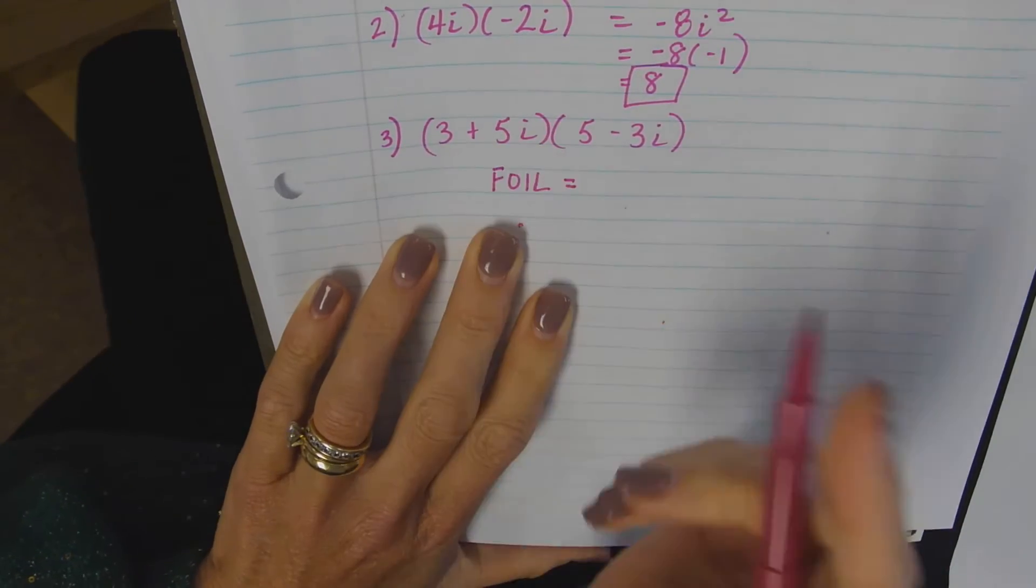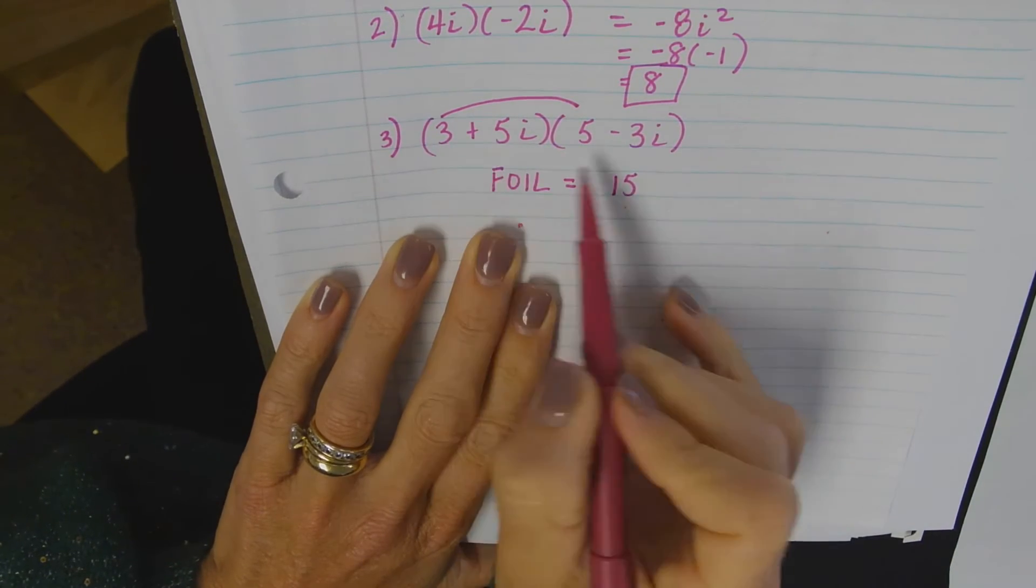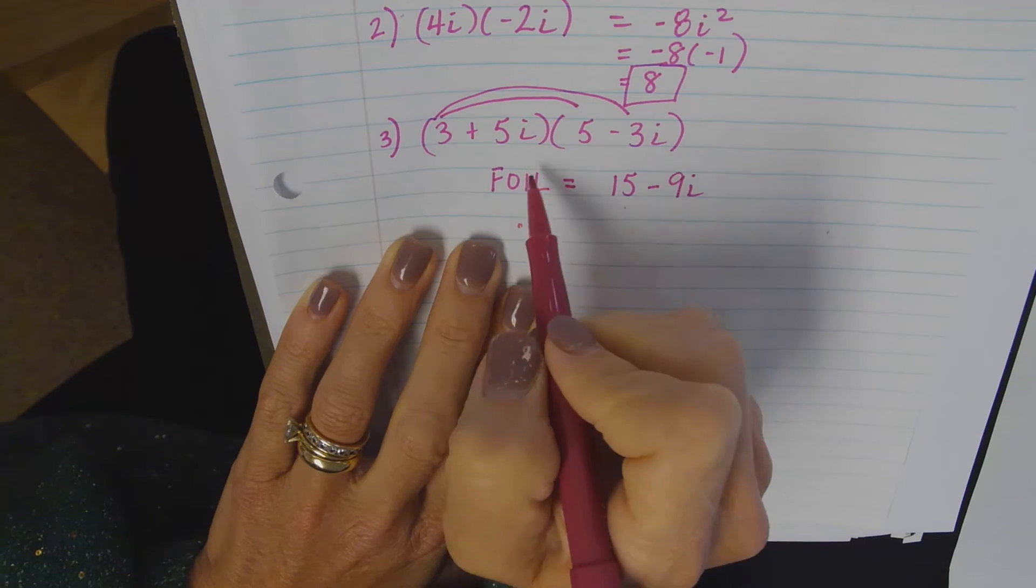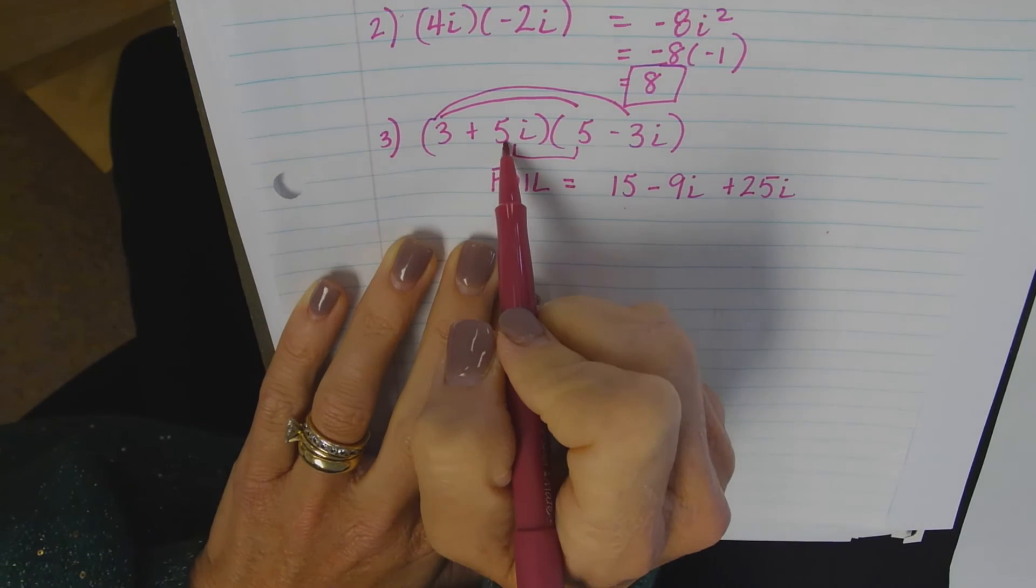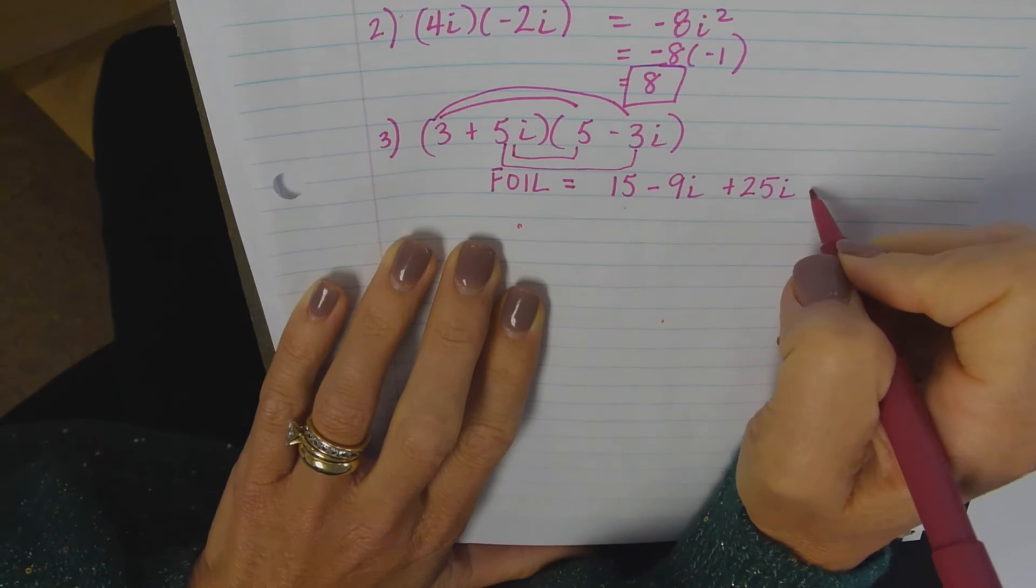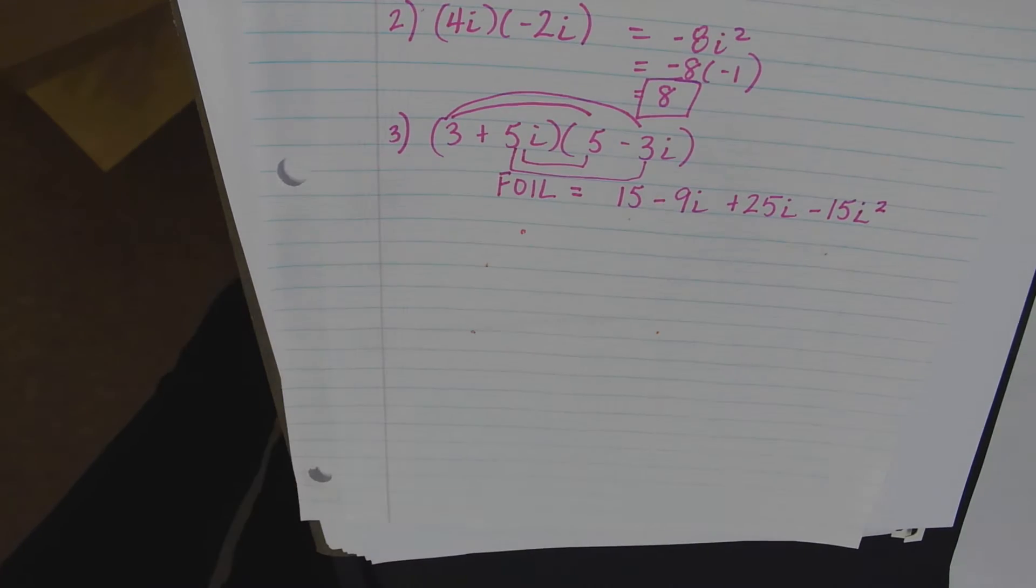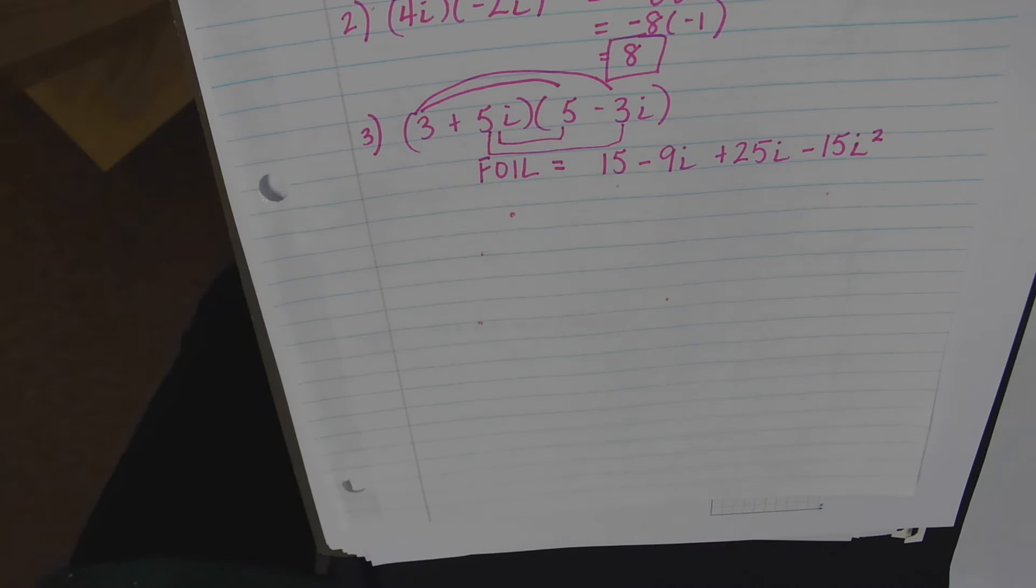The first terms in each are 3 and 5. What is 3 times 5? Fifteen. Outside: 3 times negative 3i is negative 9i. Inside: 5i times 5 is plus 25i. And last: 5i and negative 3i is negative 15i squared. I haven't gotten there yet, Jenny. Just hold off on the questions until I'm done.